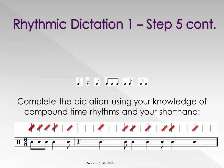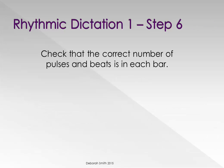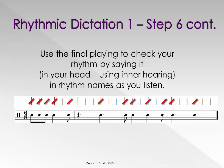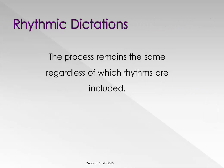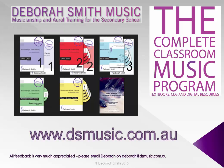Complete the dictation using your knowledge of compound time rhythms and your shorthand. Check that the correct number of pulses and beats is in each bar. Use the final playing to check your rhythm by saying it in your head in rhythm names as you listen. The process remains the same regardless of which rhythms are included. For more information and resources, visit dsmusic.com.au.